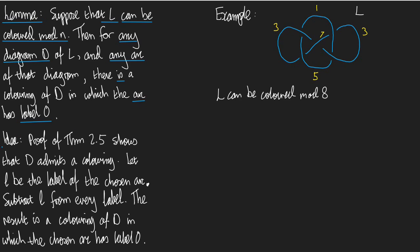Here's the idea of the proof. By the proof of theorem 2.5, theorem 2.5 is the one where we looked at Reiter-Meister moves and colourings. By the proof of that theorem, it follows that D does admit some colouring. We don't know anything about that colouring, but there is one.